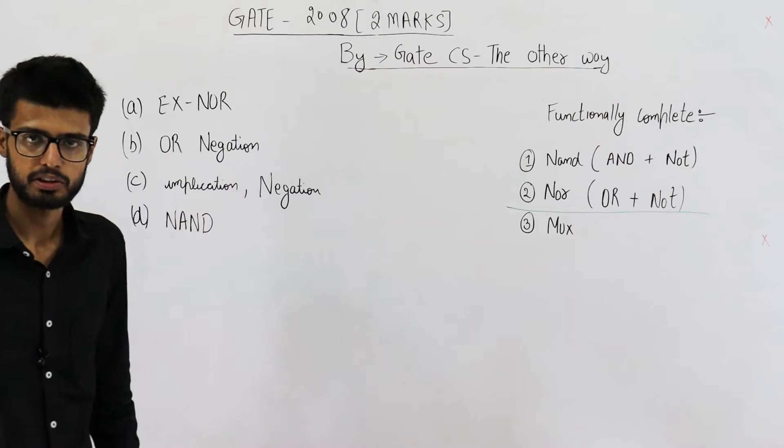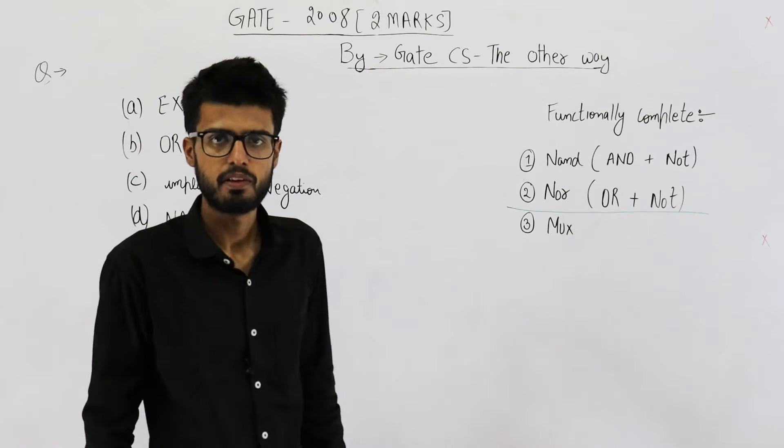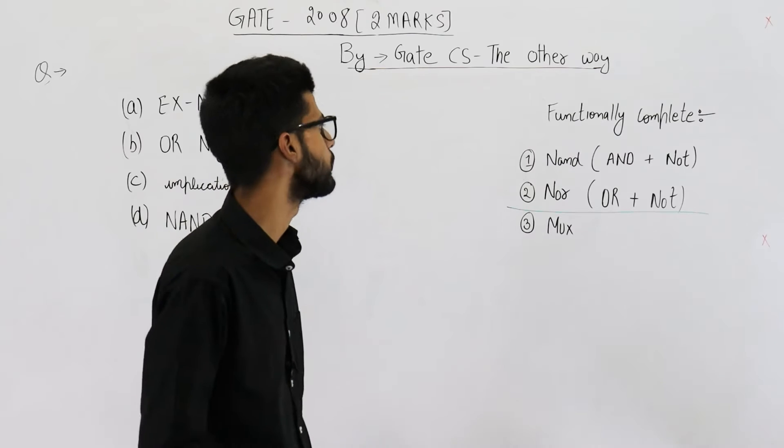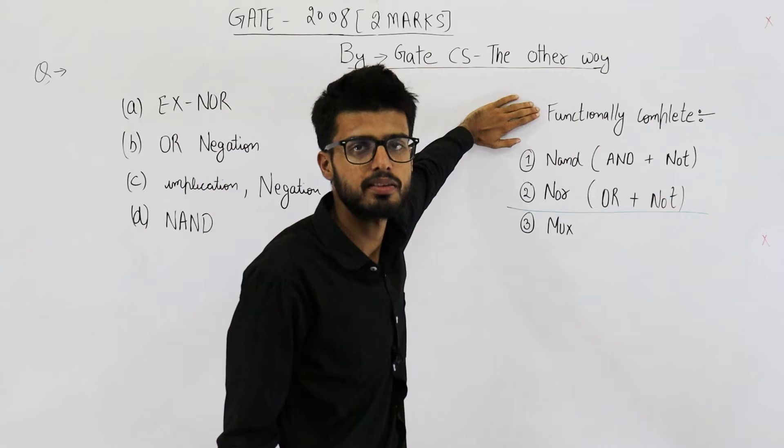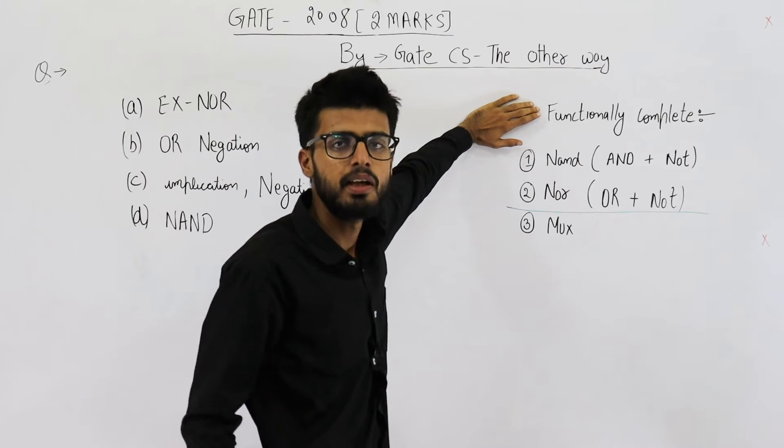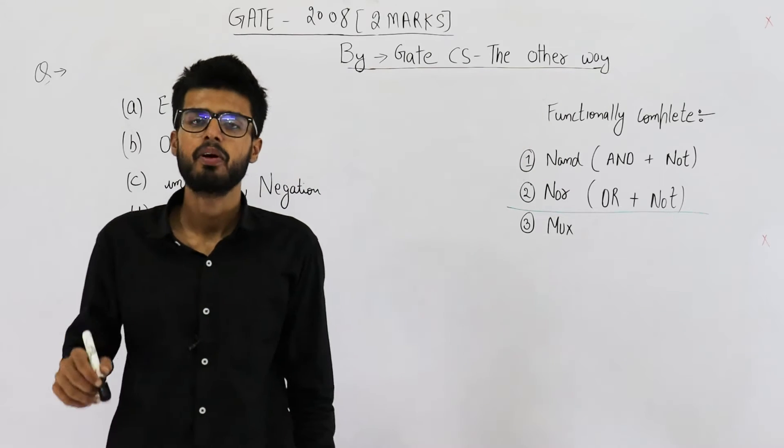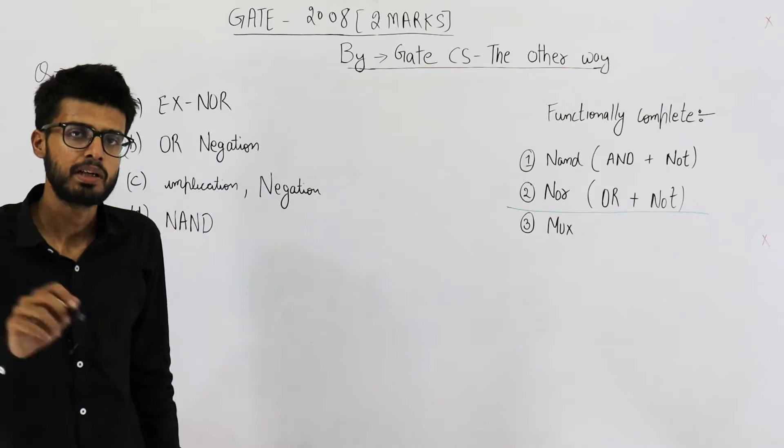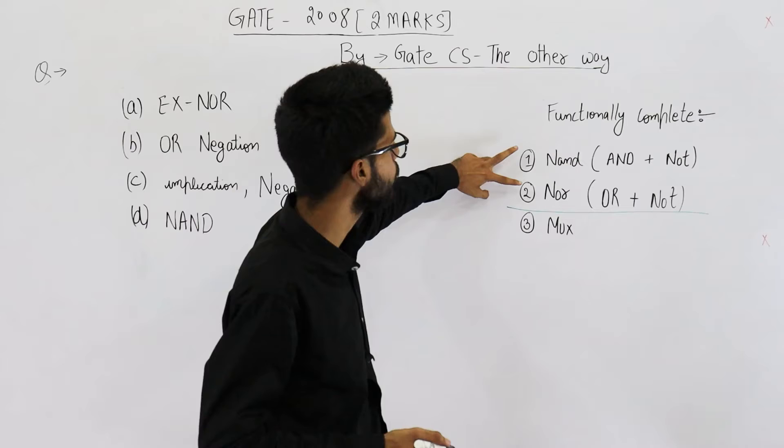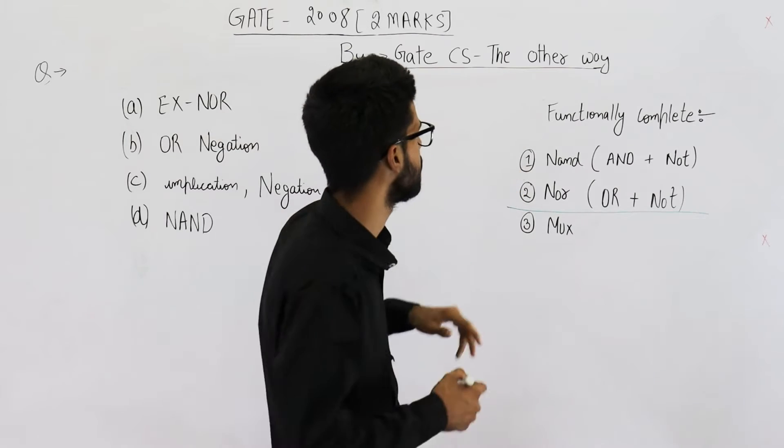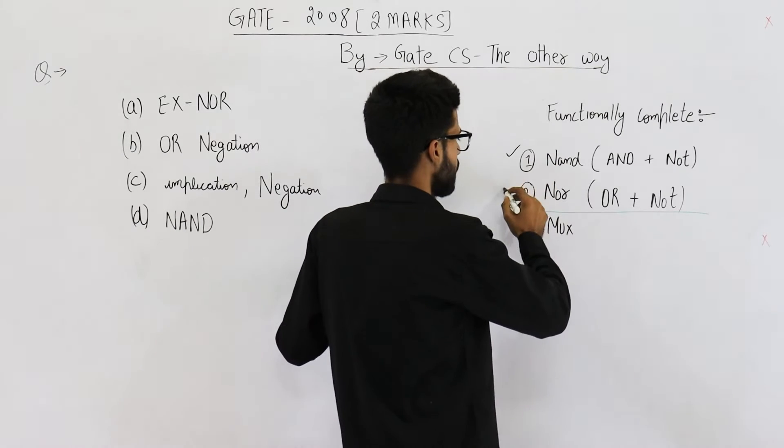They're asking which of these is not functionally complete. They've given you the definition: a circuit or device is called functionally complete if each and every possible boolean function can be implemented by using that device. There are two gates which are functionally complete: first one is NAND, second one is NOR.